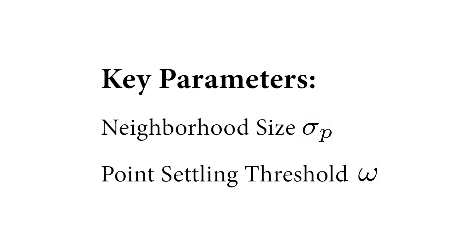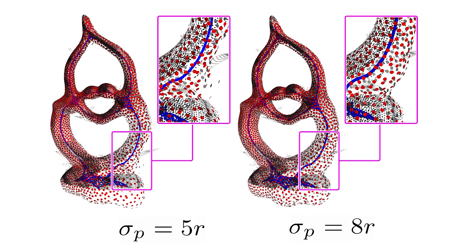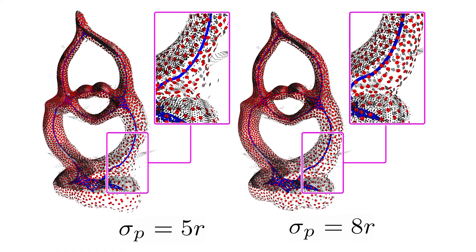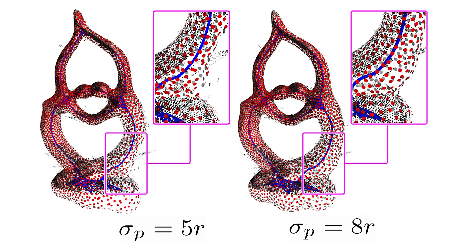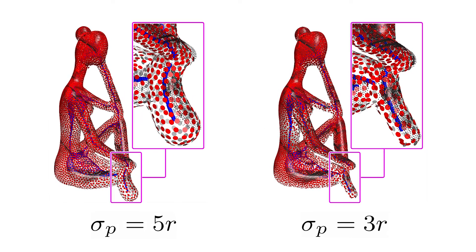There are two key parameters in our approach: the surface neighborhood size, sigma p, and the point-settling threshold omega. These two examples show that larger surface neighborhood values, sigma p, often lead to representations that are more robust against input noise and large missing parts. On the other hand, the consolidated surface may not represent the surface details as well.